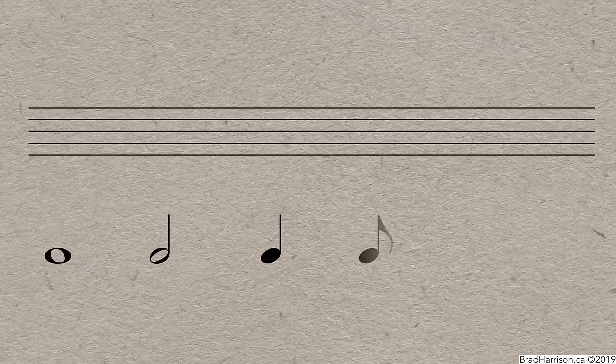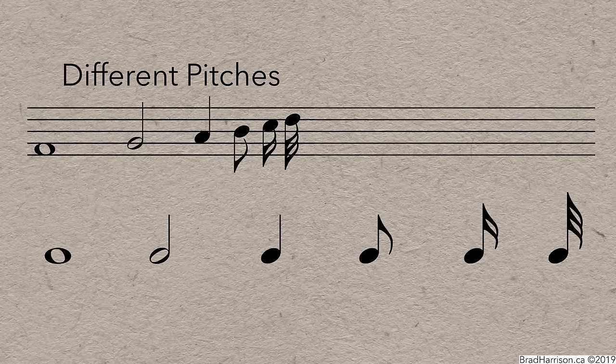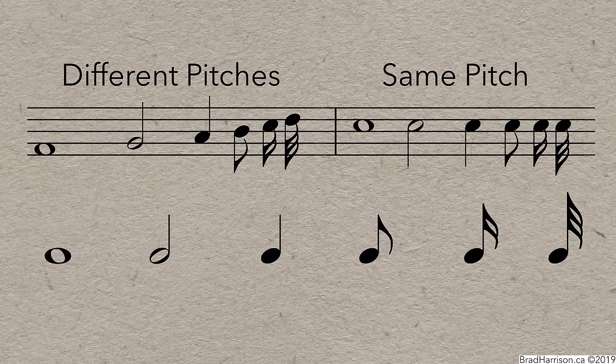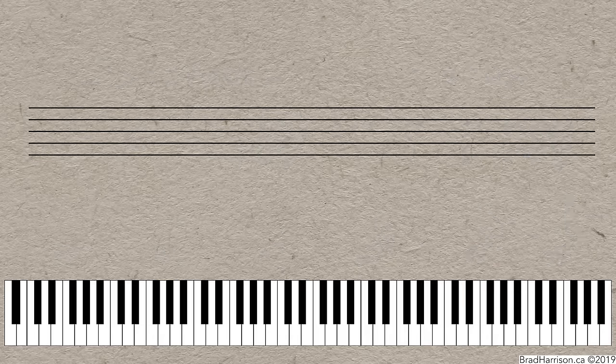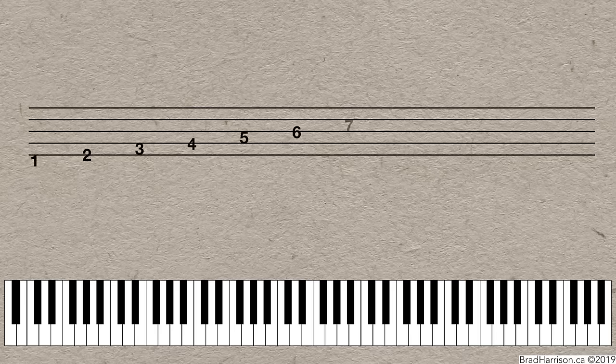Notation. Music is written on a special type of graph called a staff. Notes can come in a variety of shapes that indicate how long a note is, but it's the vertical position of a note on the staff that indicates what pitch is to be played. So, these are all different pitches, and these are all the same. Any of the 88 keys on the piano can be notated on the staff, but with only 11 possible positions, we need a way to give context to the staff.